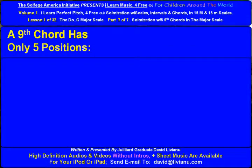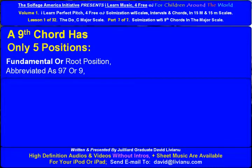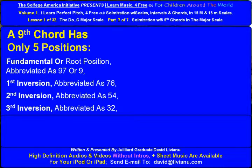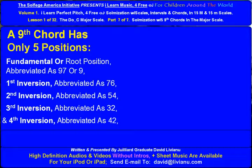A ninth chord has only five positions: fundamental or root position, abbreviated as 9-7 or 9; first inversion abbreviated as 7-6; second inversion abbreviated as 5-4; third inversion abbreviated as 3-2; and fourth inversion abbreviated as 4-2, which is rarely used.